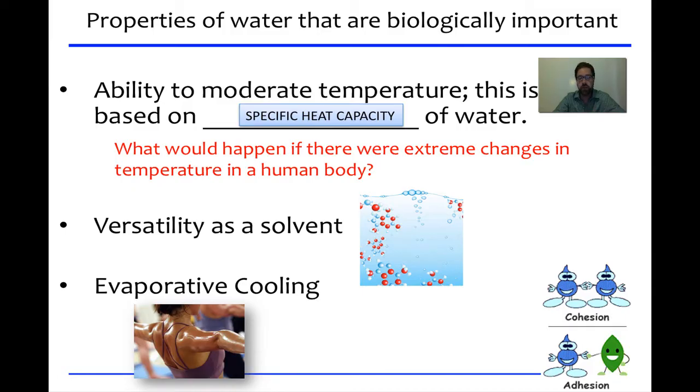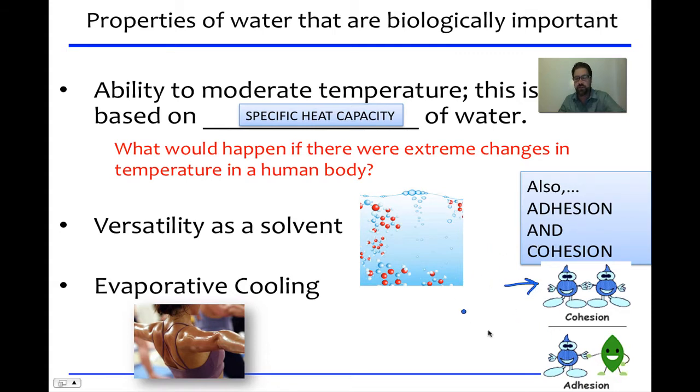The last one is adhesion and cohesion. Water likes itself a lot, as you saw by the hydrogen bond. Water is attracted to itself. But water can be attracted to other things as well. For example, water loves glass, which is why when you're measuring things in a graduated cylinder, you notice there's a meniscus, a little U that forms because water has high affinity for glass. Water likes itself and also likes other substances. Cohesion and adhesion play a big part in plant biology, which we'll get to later.